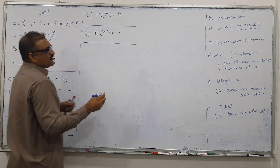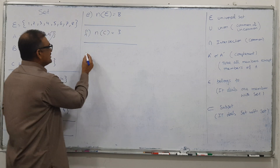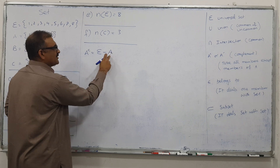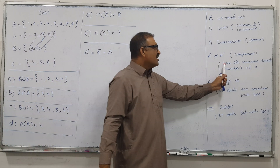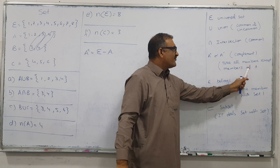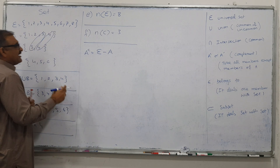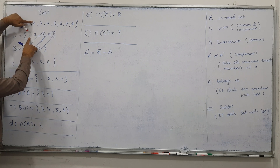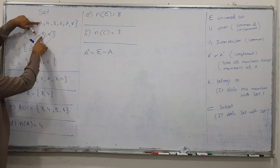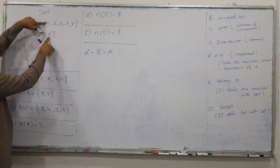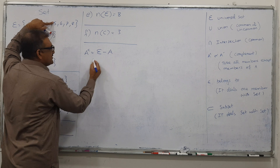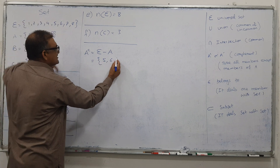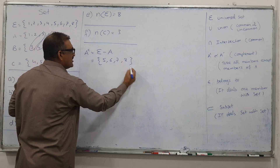Similarly, let's go for the complement. Complement's definition is: from the universal set, leave all those members which are present in A — take all members except the members of A. Is 1 present in A? Yes, don't take it. Is 2 present in A? Don't take it. Is 3, 4 present in A? Don't take them. Is 5 present in A? No, so take it. 5, 6 is not present, so take it. And 7 and 8. This is called A complement.